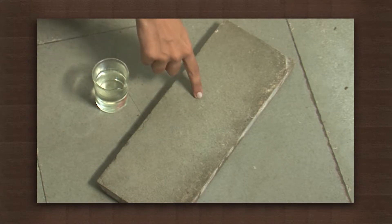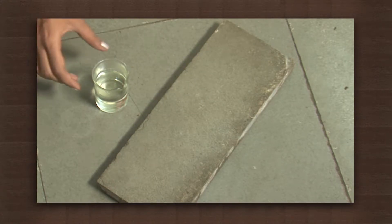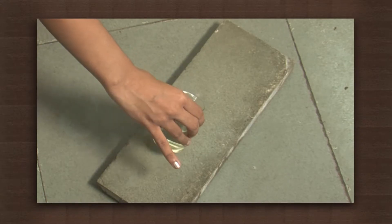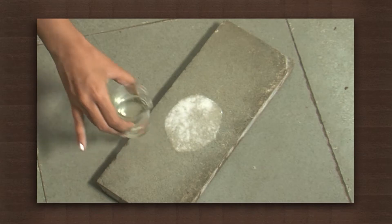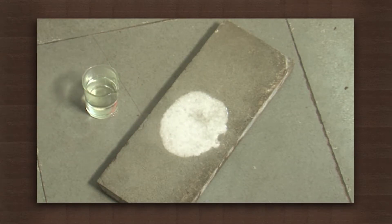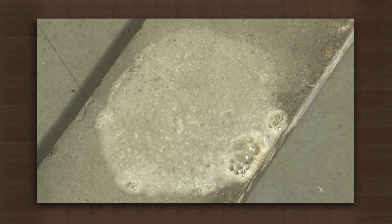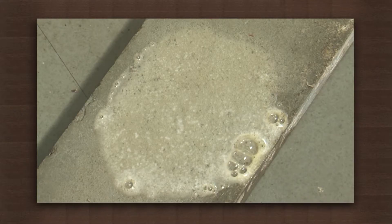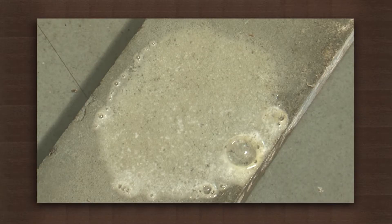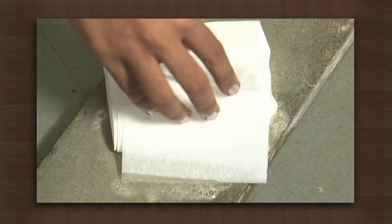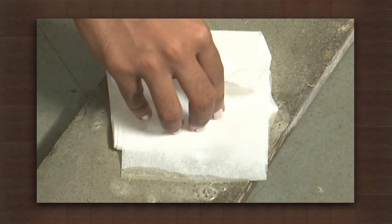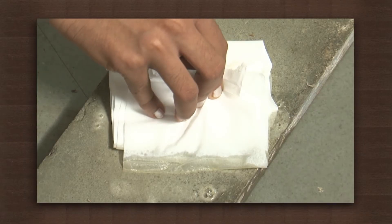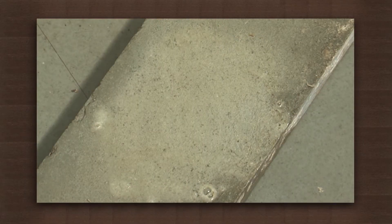We will use hydrochloric acid and a slab of cota stone. Put the HCl on the stone slab. You will see fizzing on the surface. Take some tissue and absorb the acid. A mark is left on the slab, which is also known as etching.